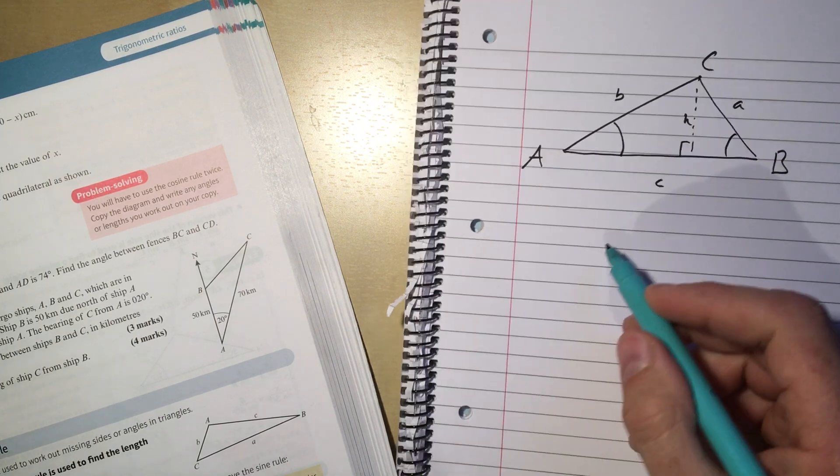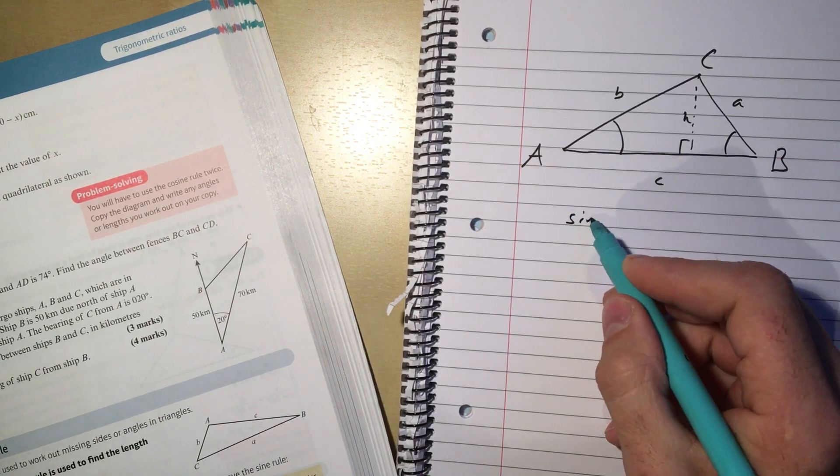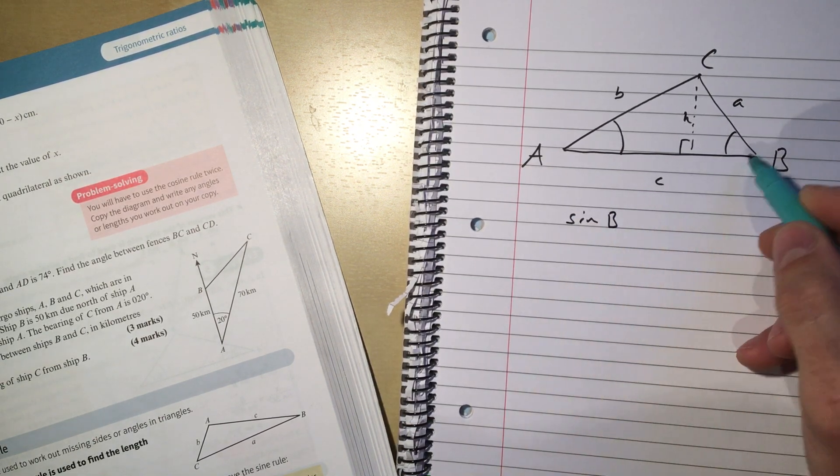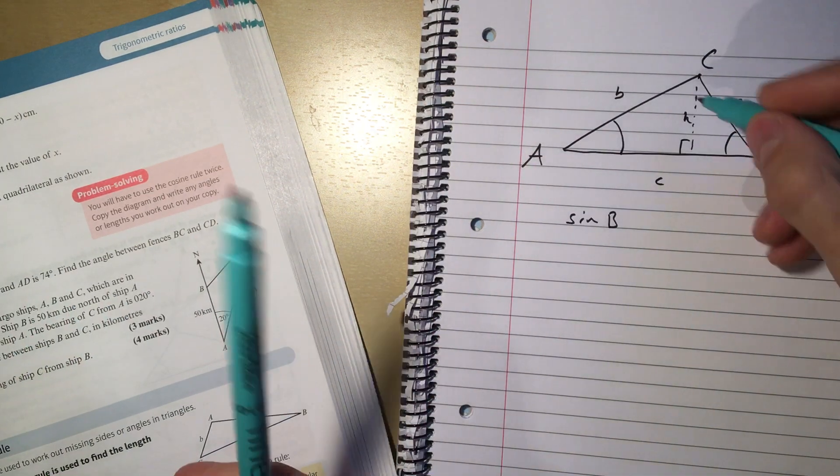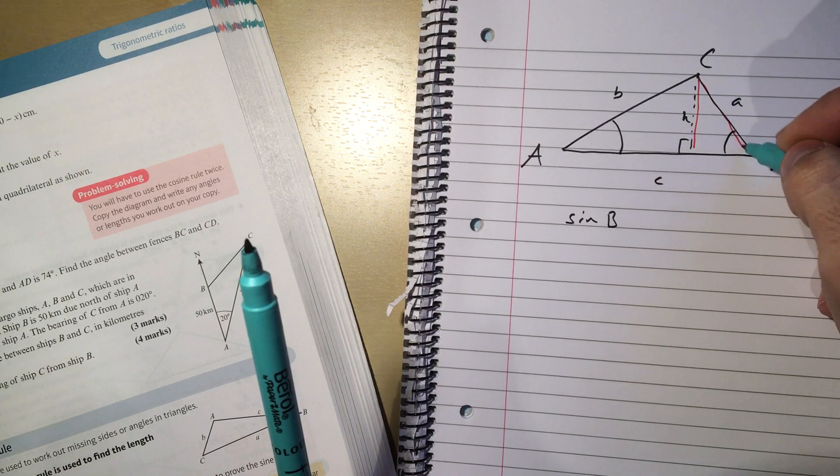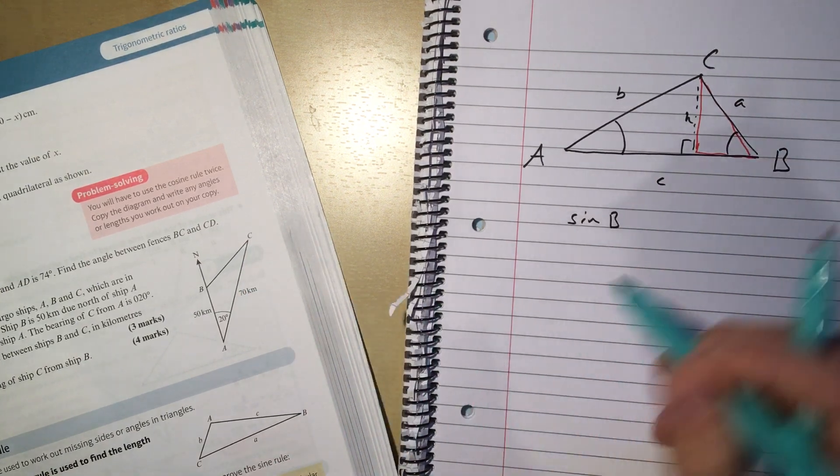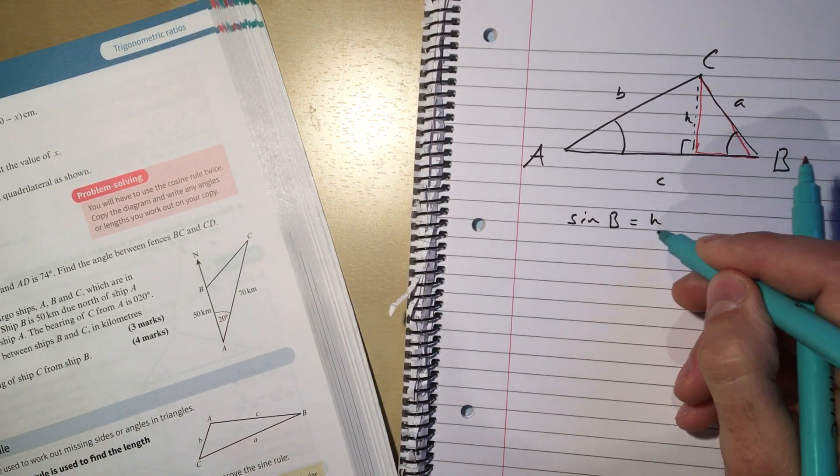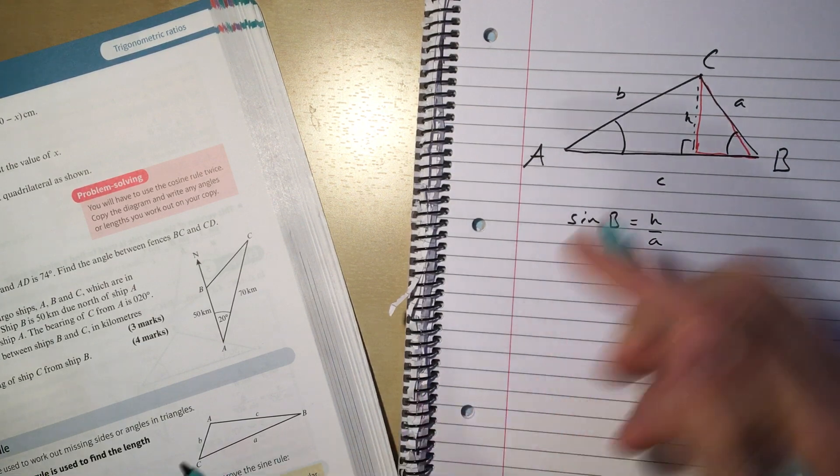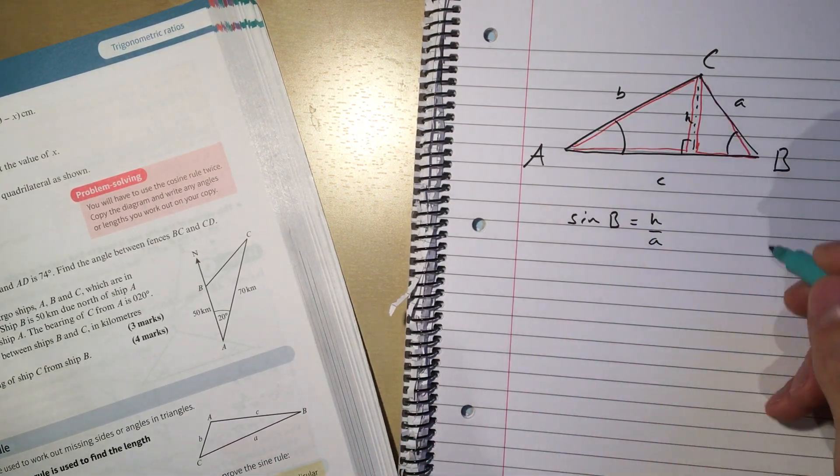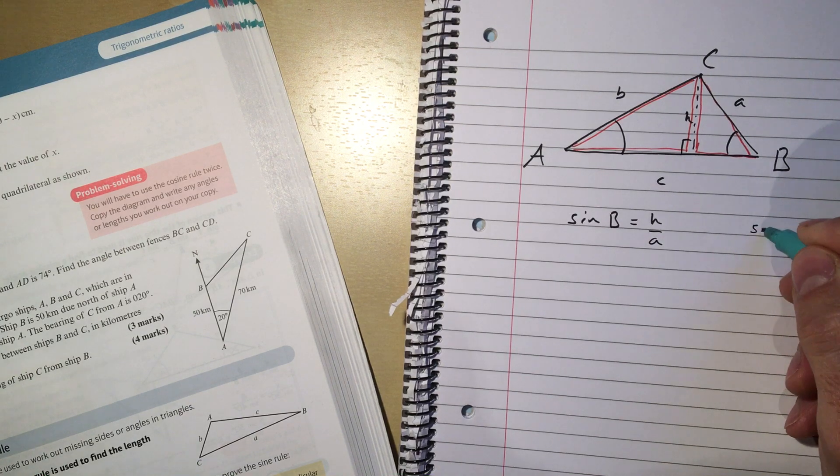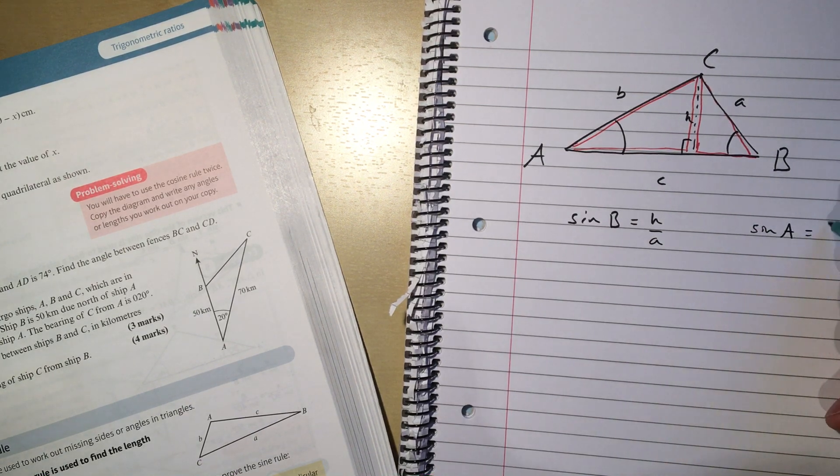So what do we have? We have sine of angle B. If we just look in this right angle triangle here then we can see sine of angle B equals H over A. And if I look in just this right angle triangle over here now, sine of angle A equals H over B.